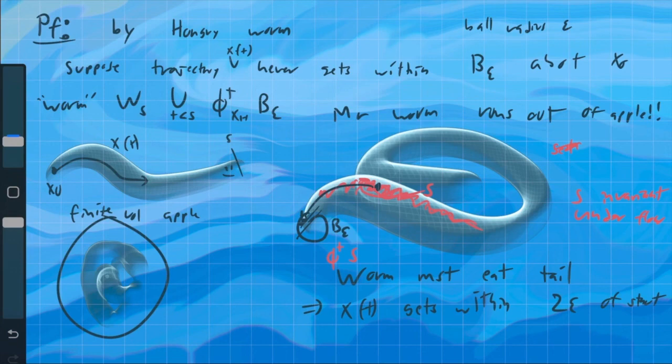So essentially, by hungry worm theorem, by a continuous version of the pigeonhole principle, and by the invariance under the flow, we can see that the worm must always eat its tail. And after it does it once, then you can just do the same argument again to say, it has to do it again after that. And so on and so forth. And there we get Poincaré Recurrence theorem.